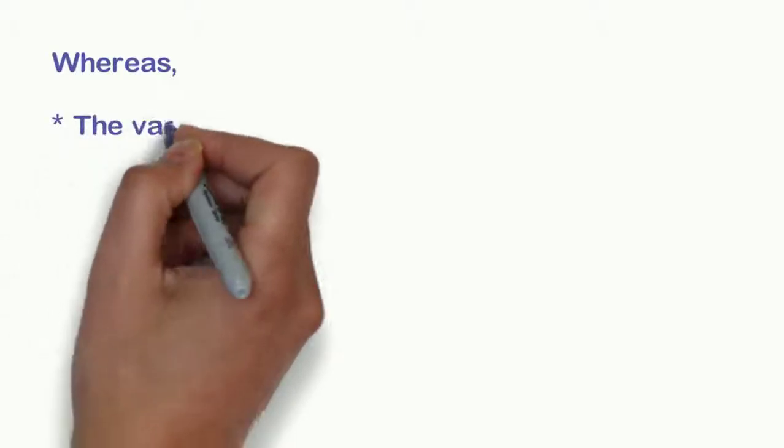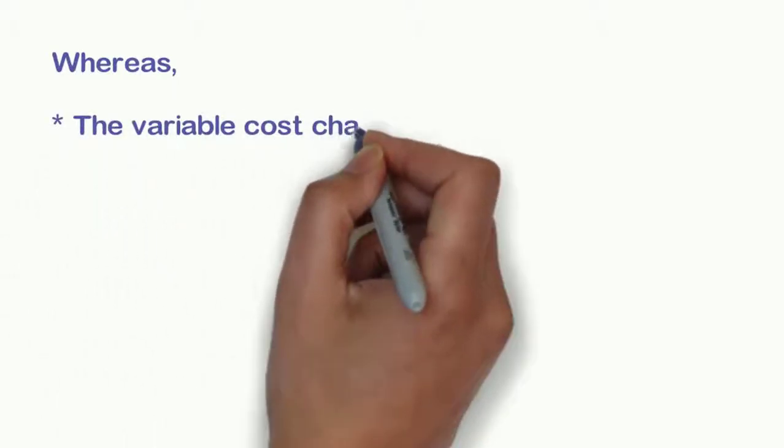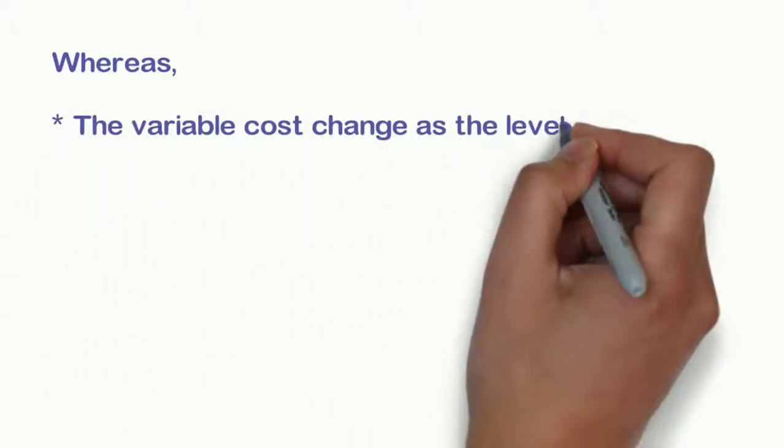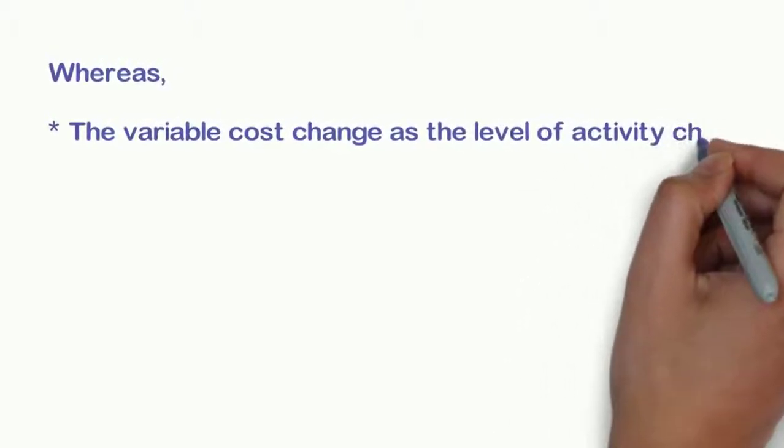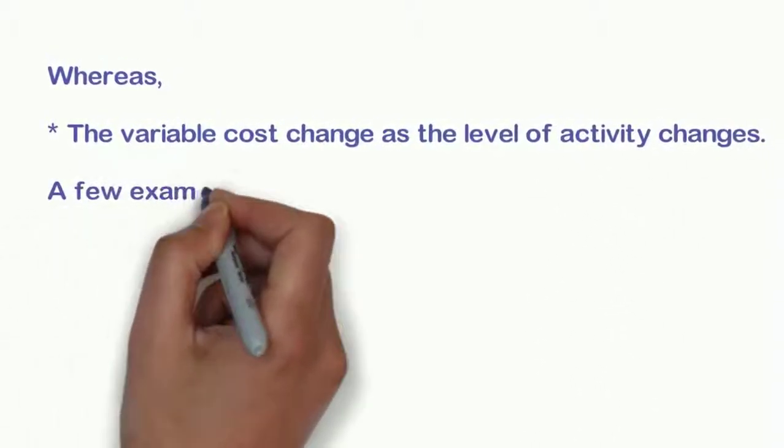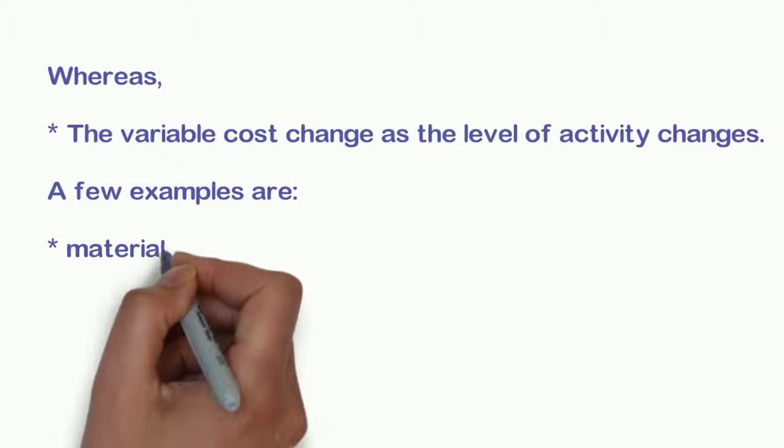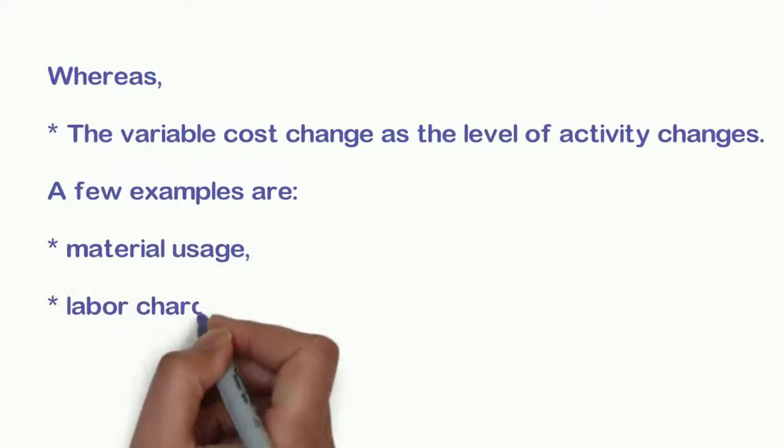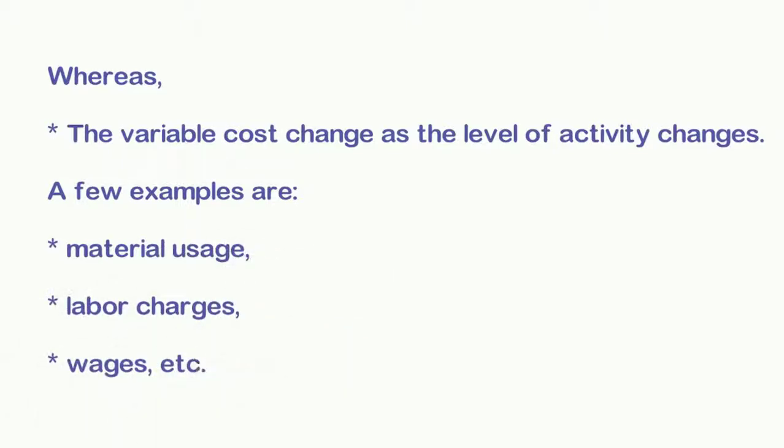Whereas, the variable cost changes as the level of activity changes. A few examples are material usage, labor charges, wages, etc.